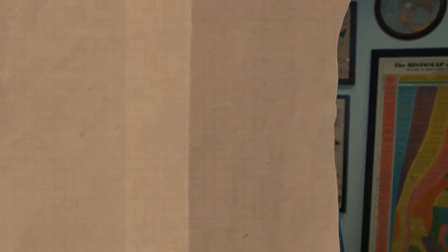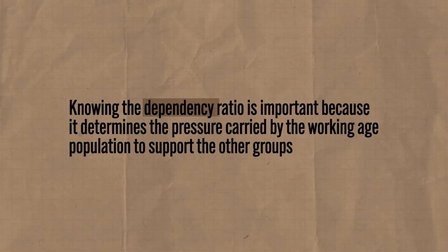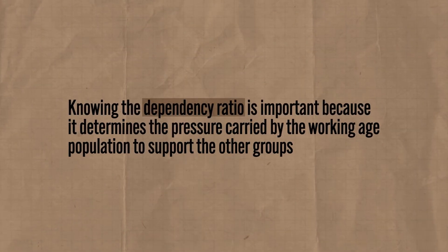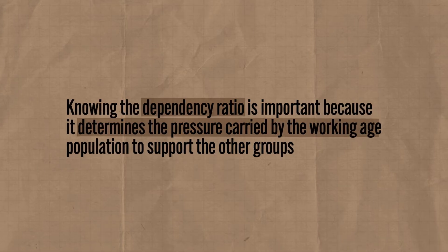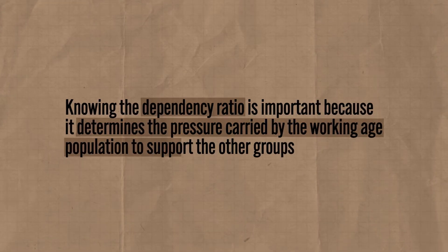And look, I know that's pretty basic math, but I'm a humanities teacher and that feels like a pretty big accomplishment, so don't take this away from me. Anyway, knowing the dependency ratio is important because it determines the pressure carried by the working population to support the other groups. The higher that number, the heavier the burden on working age people; the lower the number, the less pressure on them to support their dependents.